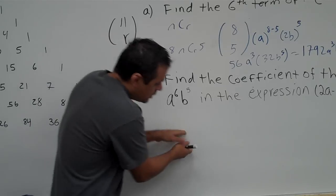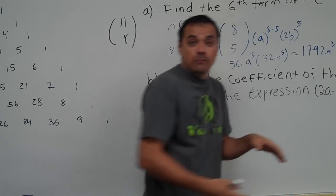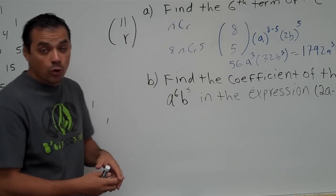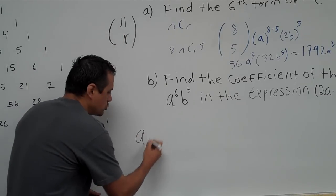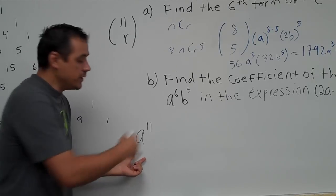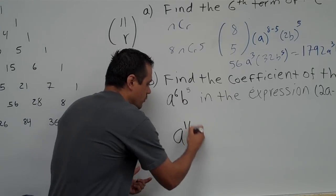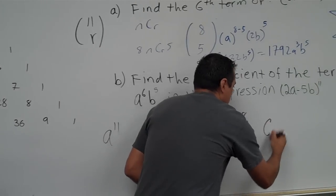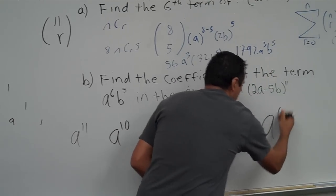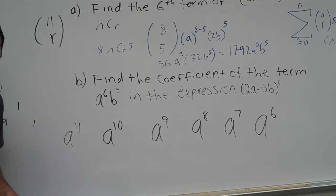Now, remember that when you list the numbers in your row by using the binomial theorem, basically, you start with, for example, you start with a to the 11th. Then the next term is what? You go in descending order. a to the 10th, a to the 9th, a to the 8th, a to the 7th, a to the 6th. You guys remember that, correct?